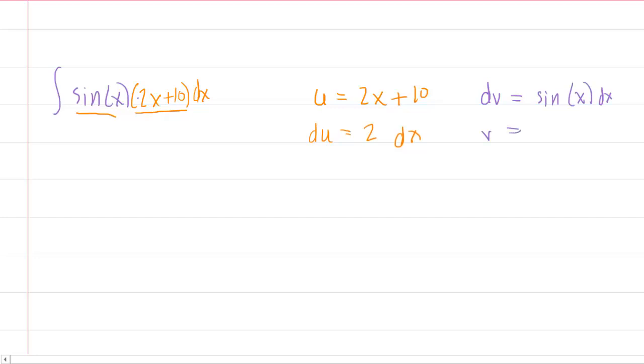Remember to go from dv to v, you have to integrate. The integral of sine of x is negative cosine of x. Okay, so now in order to integrate this, we follow the integration by parts formula. Remember, it was uv minus the integral of v du.